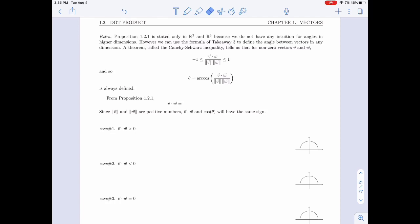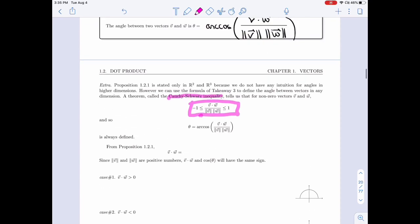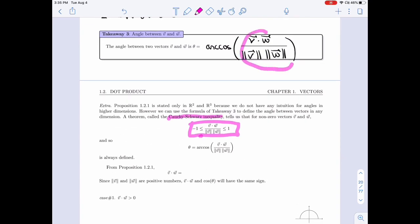And even though we don't have an intuition for the angle, we could still define it. In fact, there's a theorem called the Cauchy-Schwarz inequality that we will not see, but it tells us that any time you have two non-zero vectors, this interior of our cosine here is between minus 1 and 1.